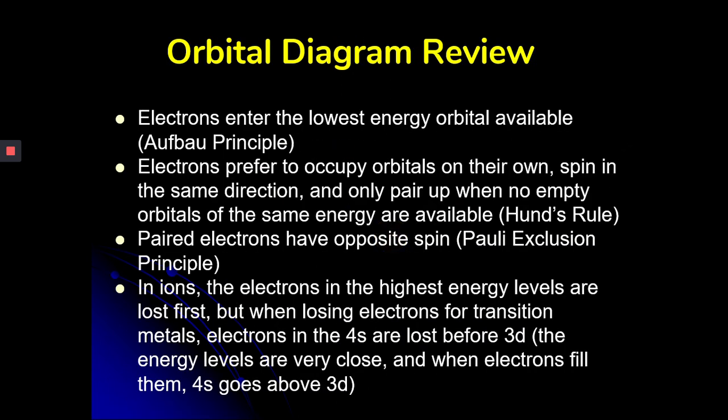So remember, electrons enter the lowest energy levels first. That's Aufbau. They prefer to occupy orbitals on their own, spinning in the same direction. But when you pair them up, they have to be opposite directions. That's Hund's rule and Pauli exclusion principle. Ions, the electrons in the highest energy level, are lost first, except for transition metals, which lose the 4S before the 3D.